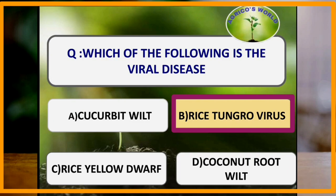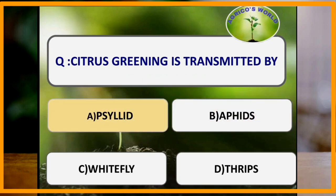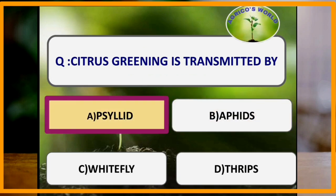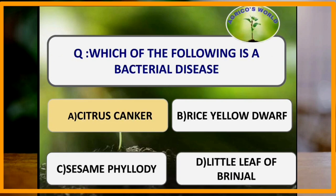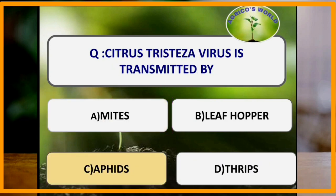Cucurbit wilt is a bacterial disease, and rice yellow dwarf and coconut root wilt are phytoplasmal diseases. Citrus greening is transmitted by psyllid. Citrus canker is a bacterial disease. Citrus tristeza virus is transmitted by citrus aphid.